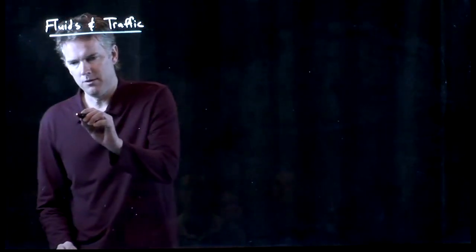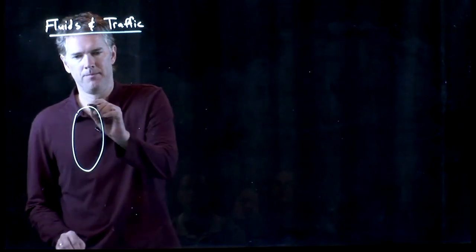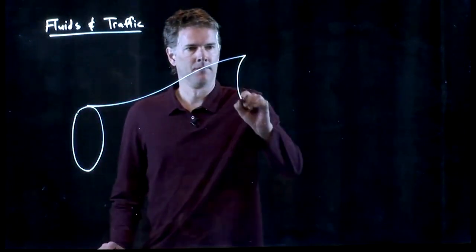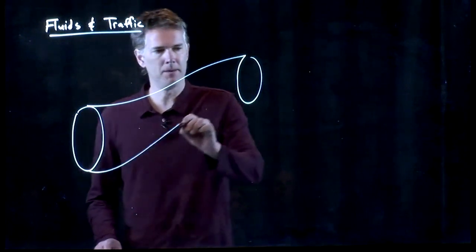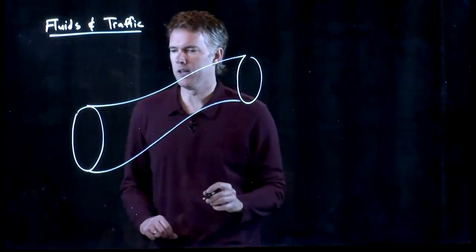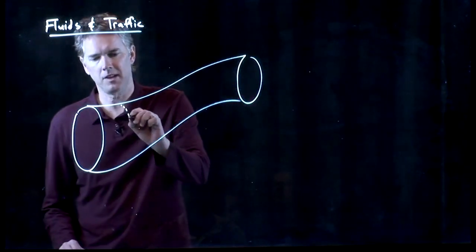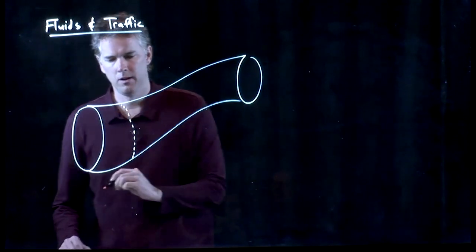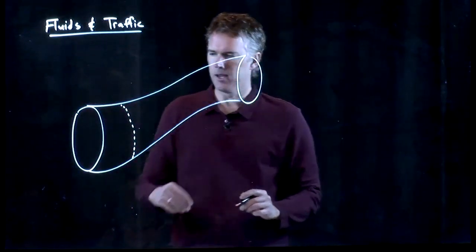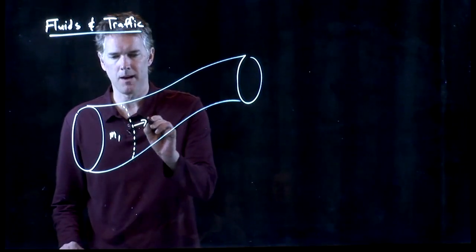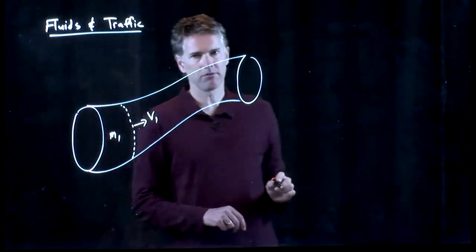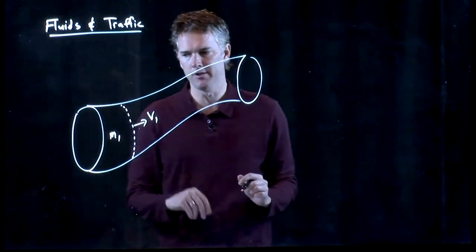Let's draw a picture of a pipe. Here's a pipe, and if we think about some slab of water moving through this pipe, then we can say that slab of water is going to have a mass M1 and a speed V1.